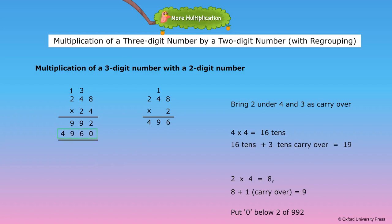Now we add nine hundred and ninety-two and four thousand nine hundred and sixty. The final answer is five thousand nine hundred and fifty-two. So,